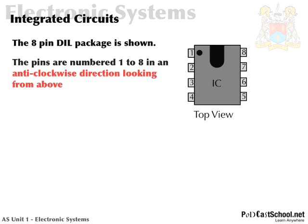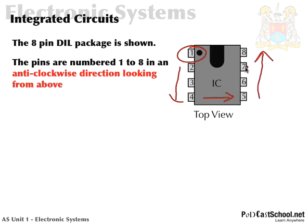Here is a normal layout of an IC. What I want you to notice is that pin one starts up on the top left, and they're numbered down the left side. Then — crucially — not back up the same side, but across to pin five and then back up to pin eight. So one is top left, down the side, across to the right, and back up. That's how they're numbered.